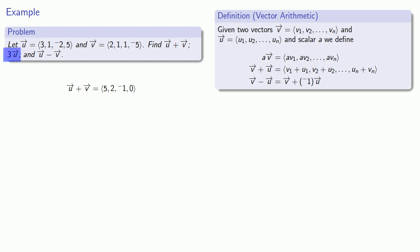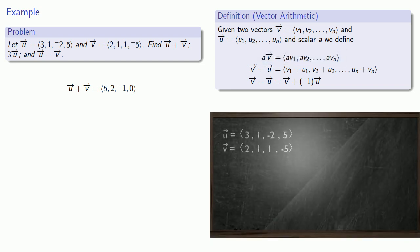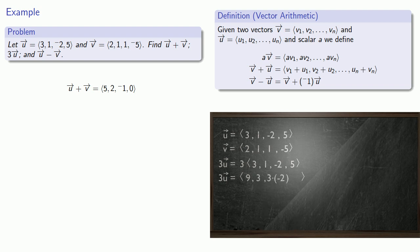What about the vector 3u? This is a scalar multiple, so checking our definition, we want to multiply every component of our vector by the given scalar. The vector 3u is found by multiplying every component of u by 3: the first component gives us 9, the second gives us 3, the third gives us negative 6, and the last gives us 15. So our vector 3u is (9, 3, −6, 15).